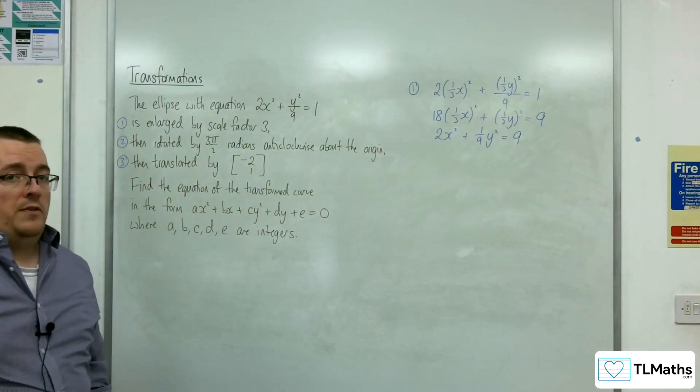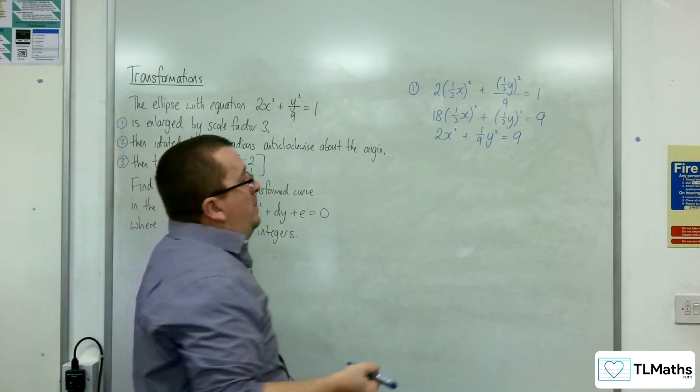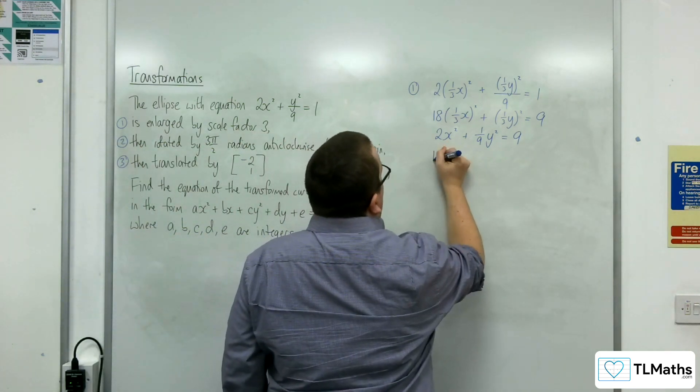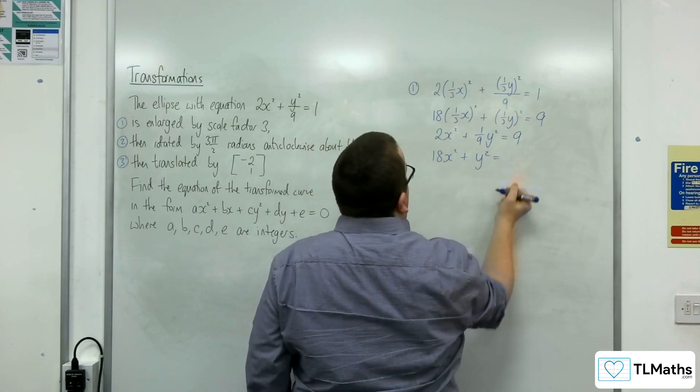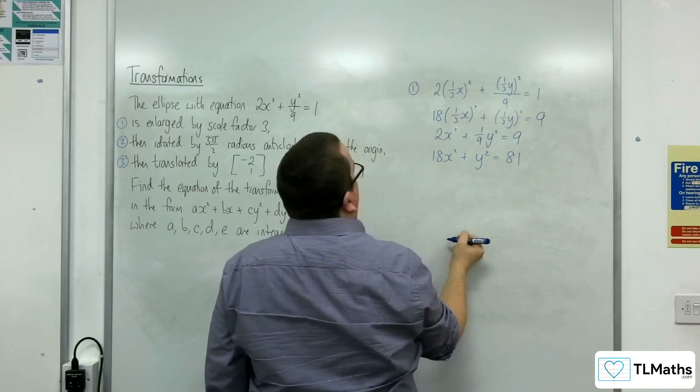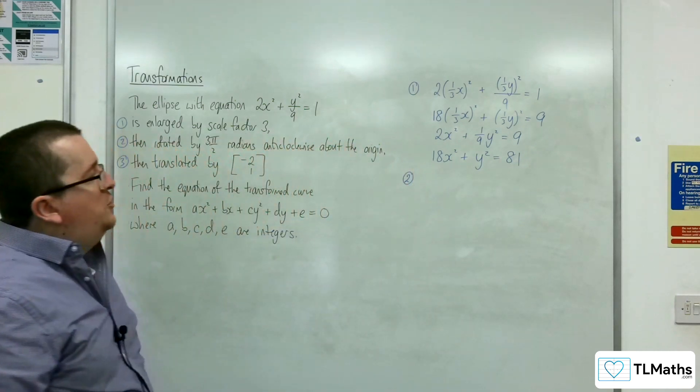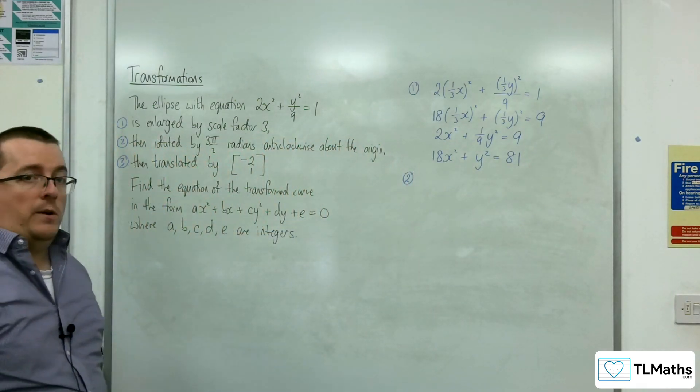And then I could multiply through by the 9 now. Probably that's a good idea. So I'll multiply through by 9. So we'd get 18x squared plus y squared is equal to 81. So that's just to get integer coefficients.